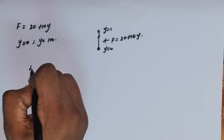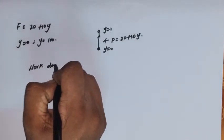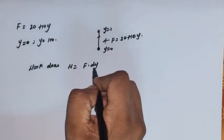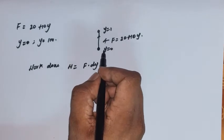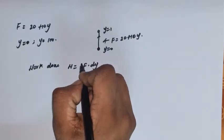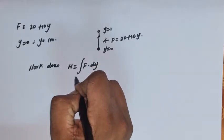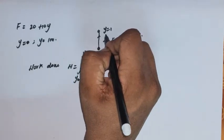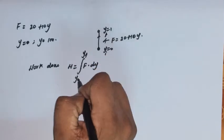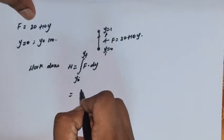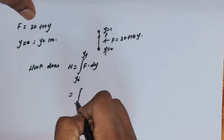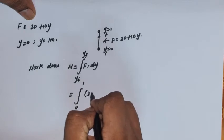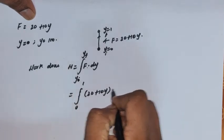In general, the work done can be represented as W, which equals the force into the displacement along the y direction. To find the work from y equal to 0 to y equal to 1, we need to integrate from y-initial to y-final. We know the force, so the work done equals the integral from 0 to 1 of (20 plus 10y) dy.